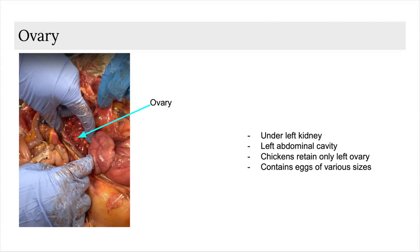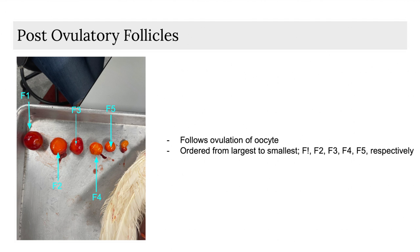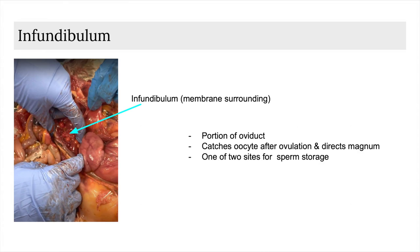Now we will be examining the reproductive system more closely. Just to preface, the specimen for our dissection was female, so most of the visuals will be centered around the parts specific to the female reproductive system. The ovary is situated under the left kidney, which places both structures on the left side of the abdominal cavity. As a general rule of thumb, chickens only retain the left ovary and oviduct. The purpose of this structure is to contain eggs of various sizes for eventual reproduction. The post-ovulatory follicles are a follicular structure that follows the ovulation of the oocyte. The infundibulum is a portion of the oviduct that catches the oocyte after ovulation and directs it to the magnum. This structure is also one of two sites within the reproductive tract utilized for sperm storage.